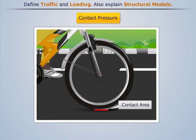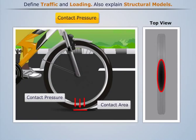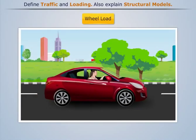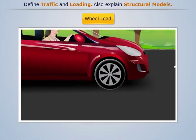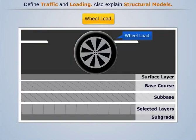The shape of the contact area is elliptical. Wheel load determines the depth of the pavement required to ensure that the subgrade soil does not fail.